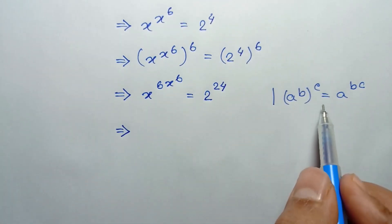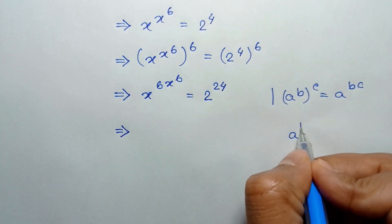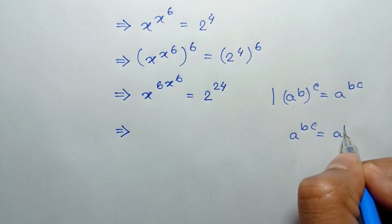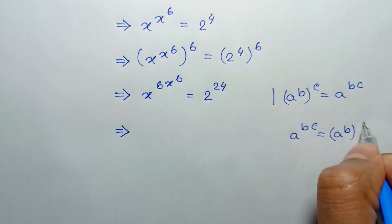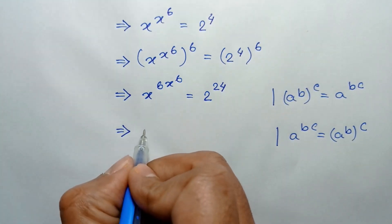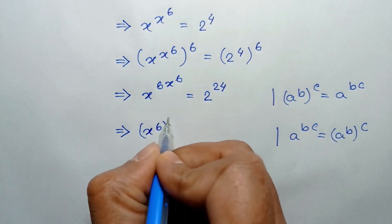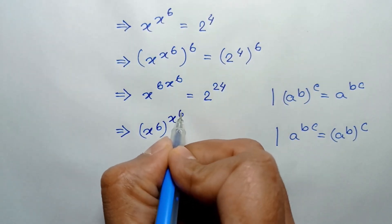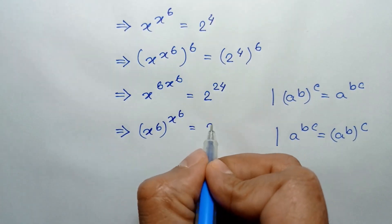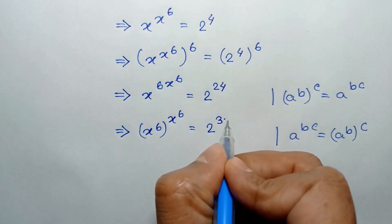According to the reverse formula, a to the power bc is equal to a to the power b, whole to the power c. It can be written as x to the power 6, whole to the power x to the power 6, is equal to 2 to the power 24, which is 3 times 8.